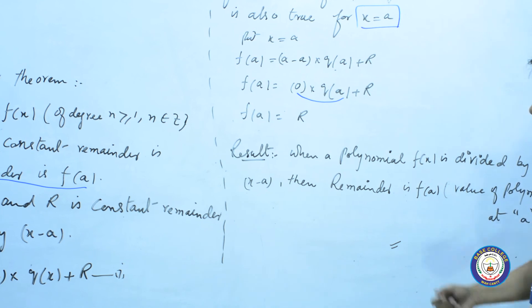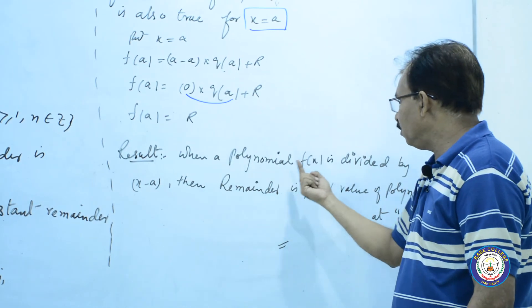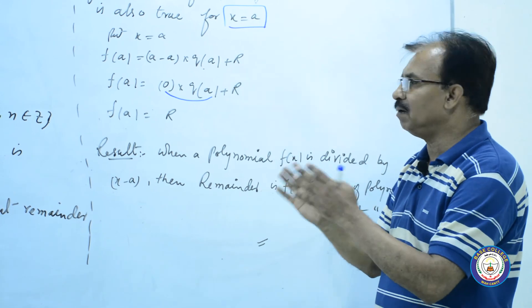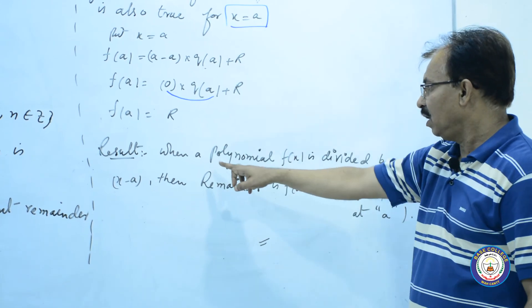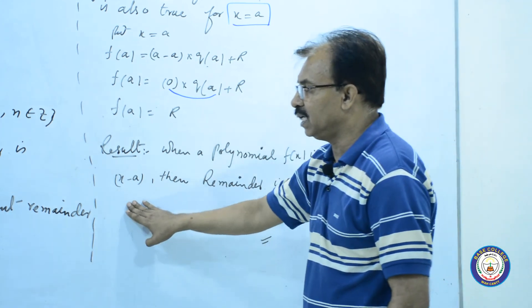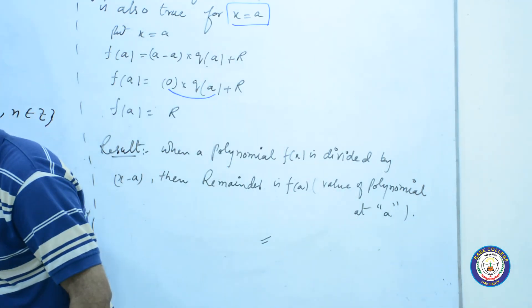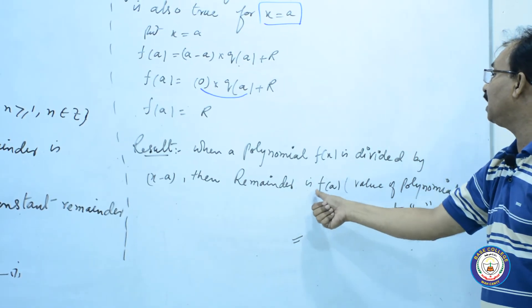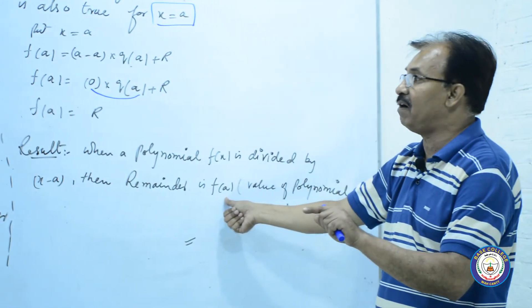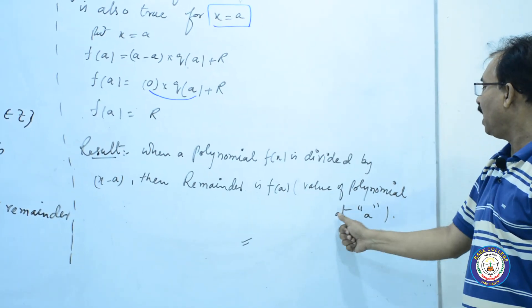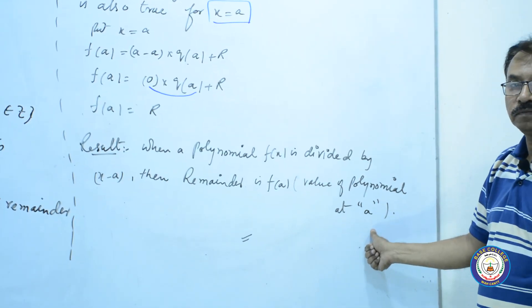اس سے result یہ نکلا: when a polynomial f(x) is divided by x minus a, then remainder is f(a)، یعنی value of polynomial at a۔ یعنی جب بھی کسی polynomial f(x) کو x minus a پر divide کریں تو remainder f(a) آئے گا۔